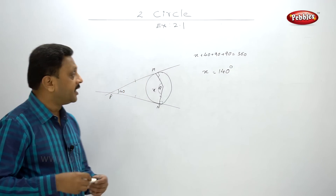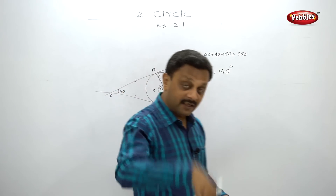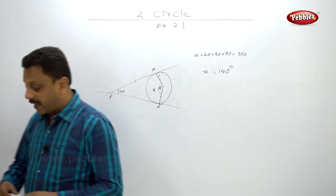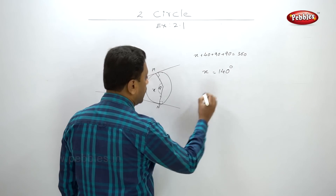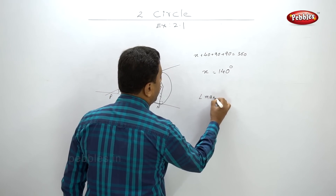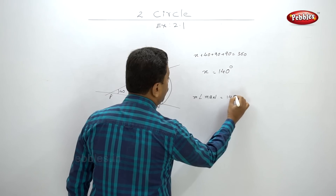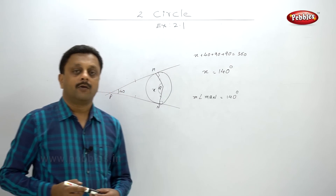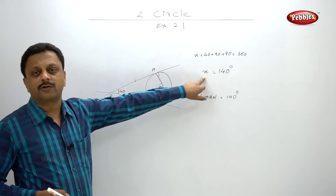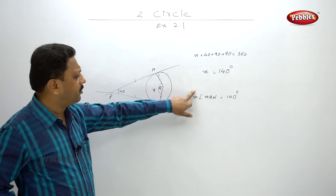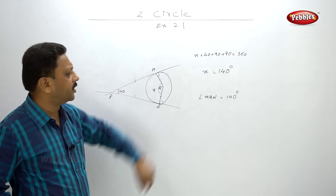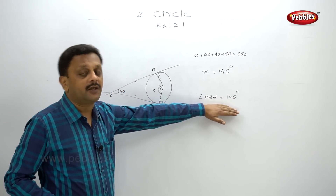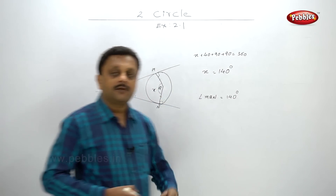Even if you use X and Y names for angles, when you write the answer, write it in the fashion they are asked. If they asked to find angle MQN, write: angle MQN equals 140 degrees. Don't write 'X equals 140' because they don't know what X is. The answer must be in the proper name of the angle.